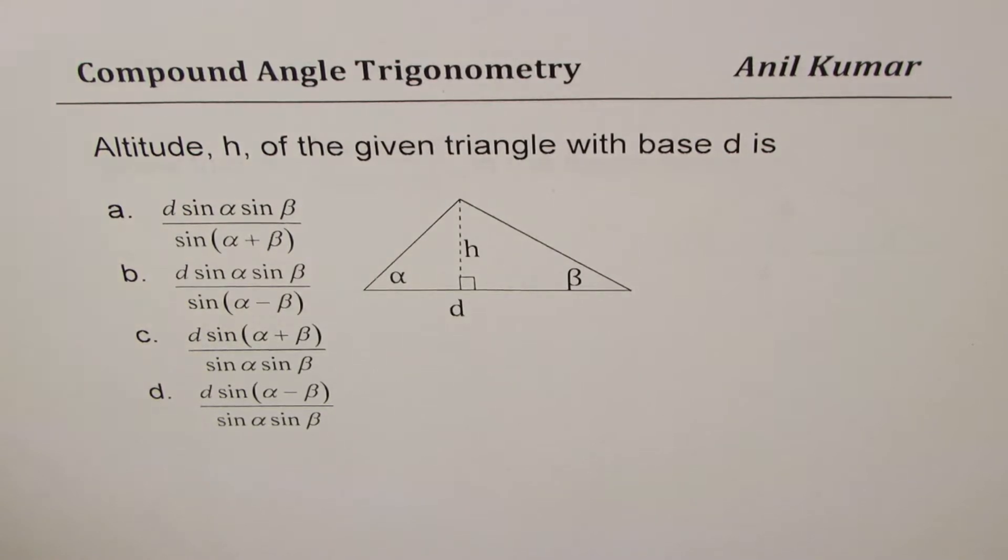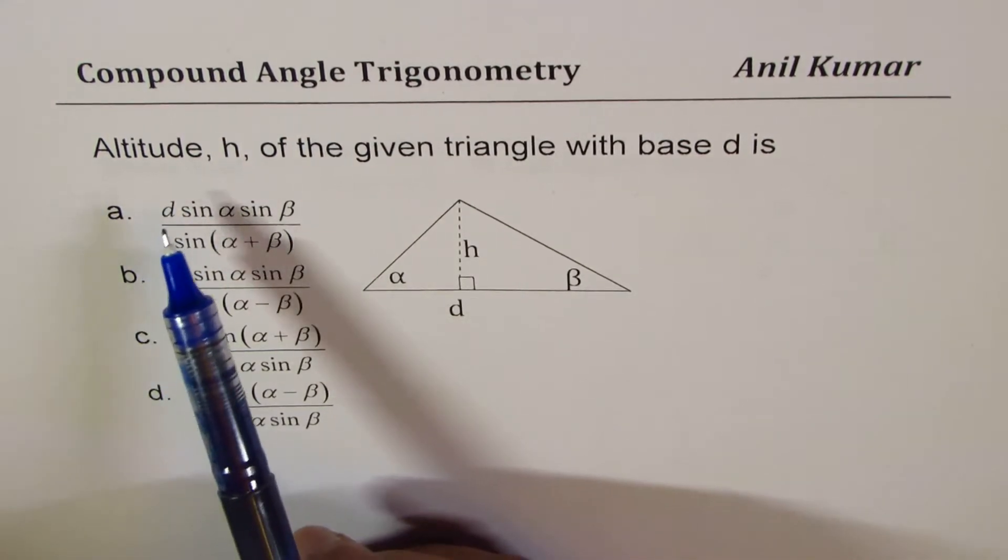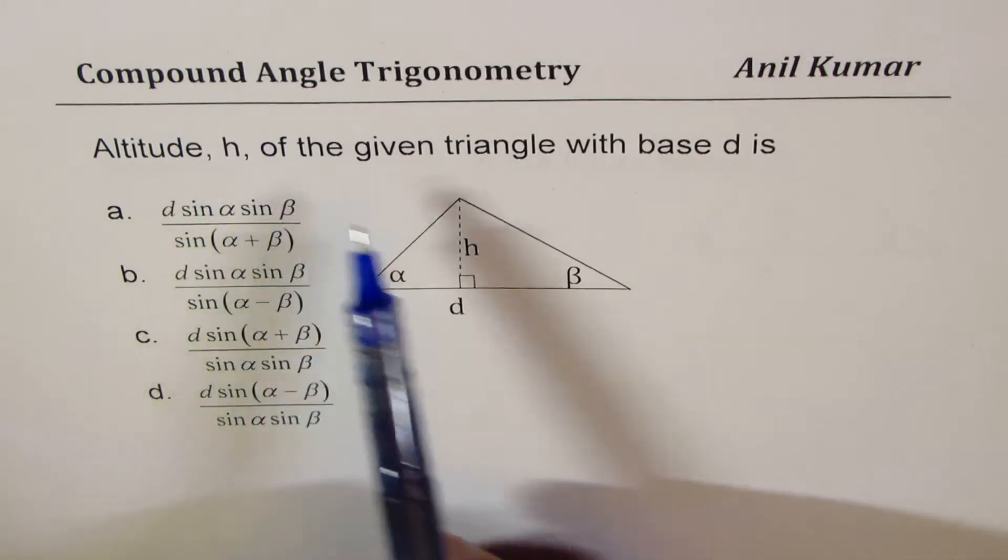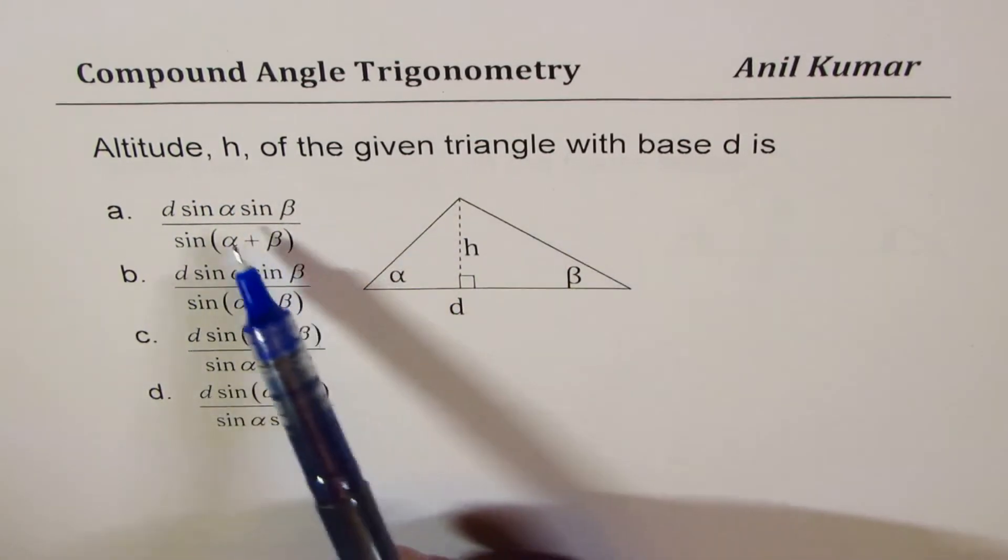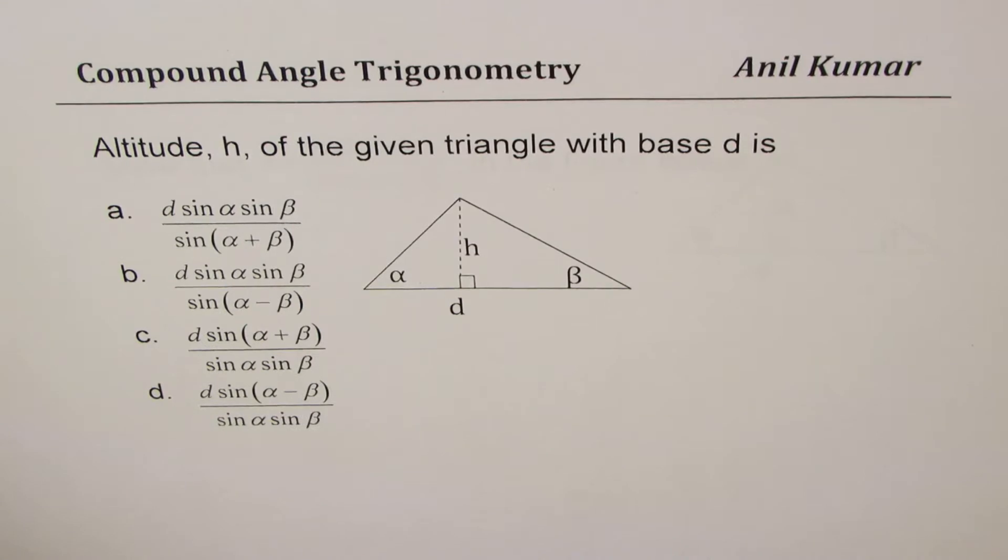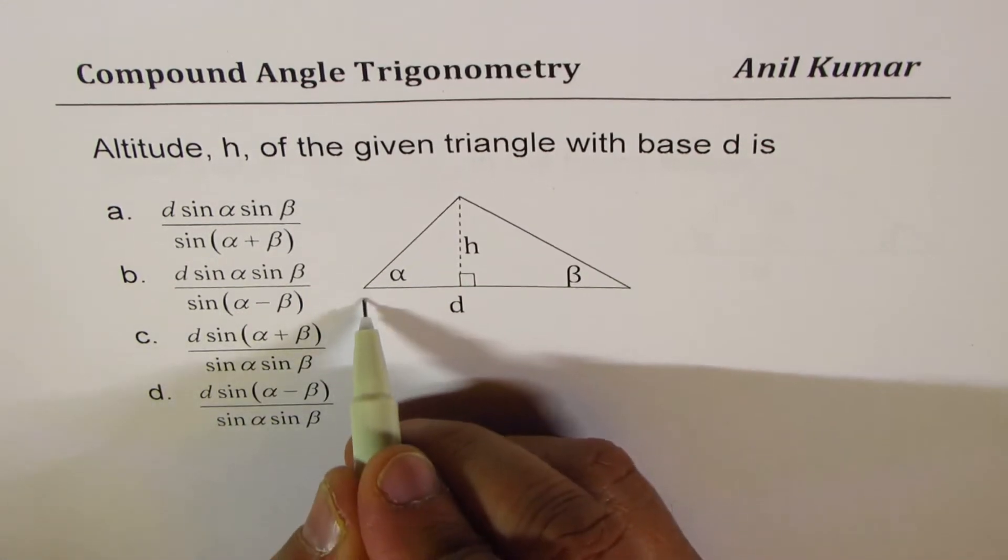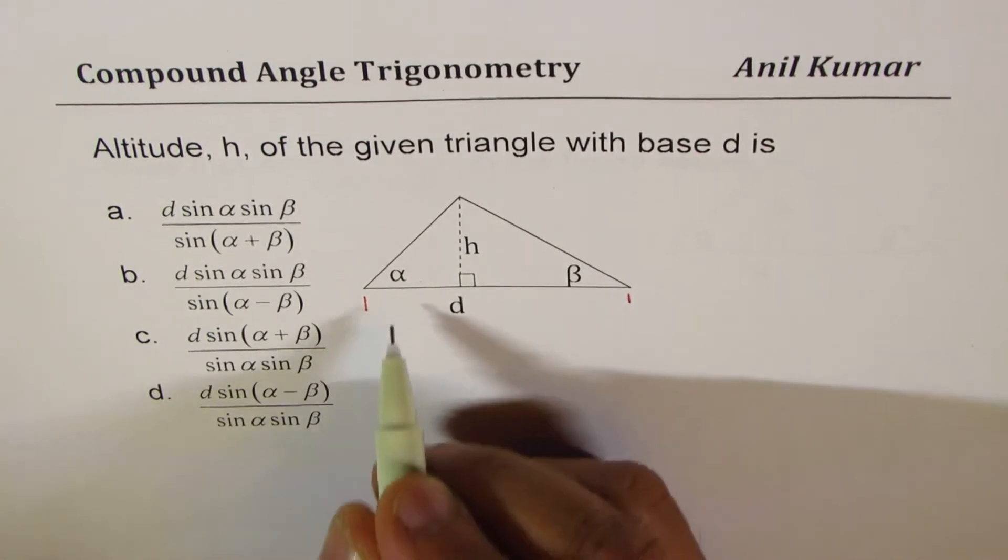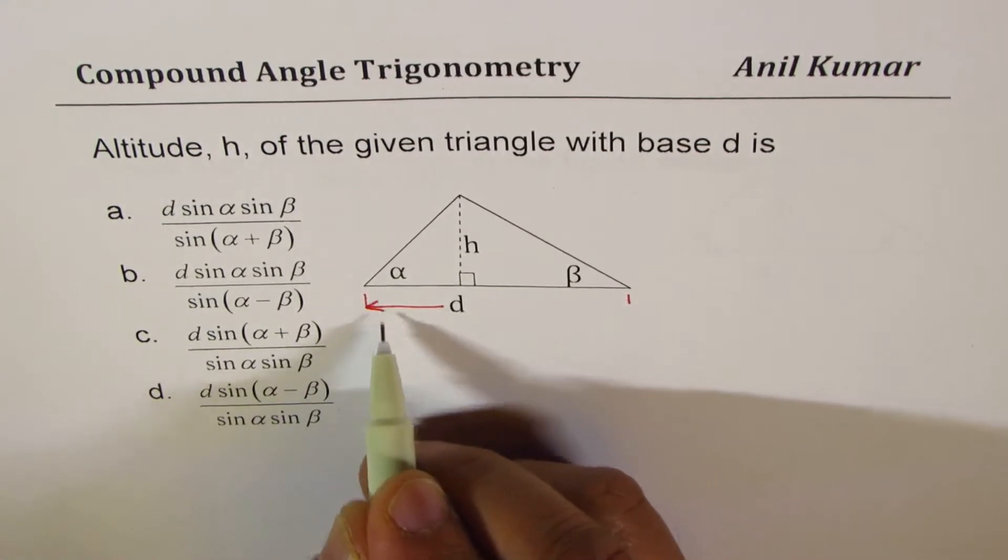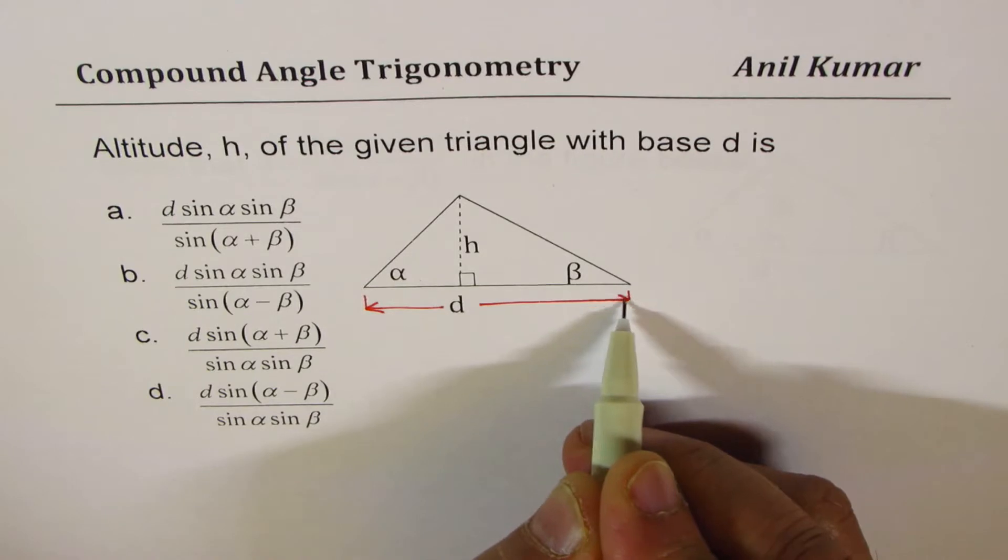The question is: altitude h of the given triangle with base d is what? Four options are given to you. Now in this particular triangle we are given the angles at the base as α and β, and d is the length of the base.